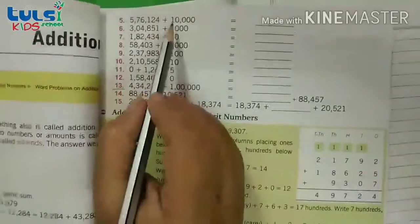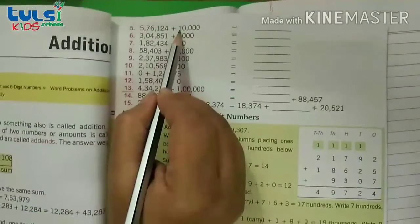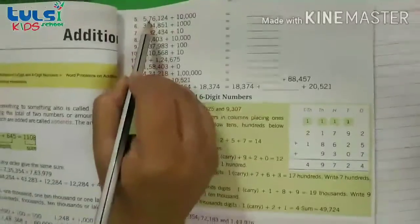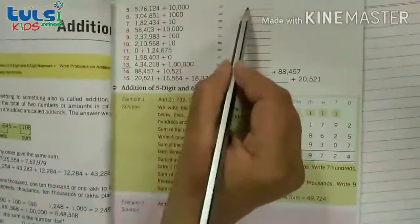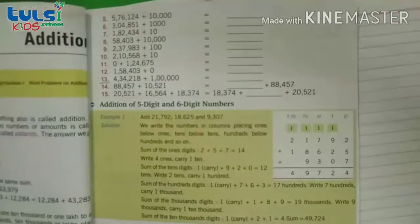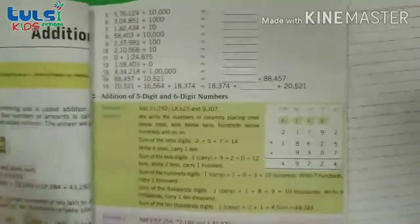But itna dhyan rakhna hai ki yehaan per jaisi ye 1 jo hai, woh 10th position ki position pe hai. Toh yehaan per 10th position ki position pe 7 hai. Toh 7 aur 1 ka plus hoke 8 aajayega. Baki poori digit as it is raheegi. Jaisa ki maine aap log ko samjhaya hai. Toh is tarikhe se aap log iska addition karayenge. Now we will move with the question number 14.